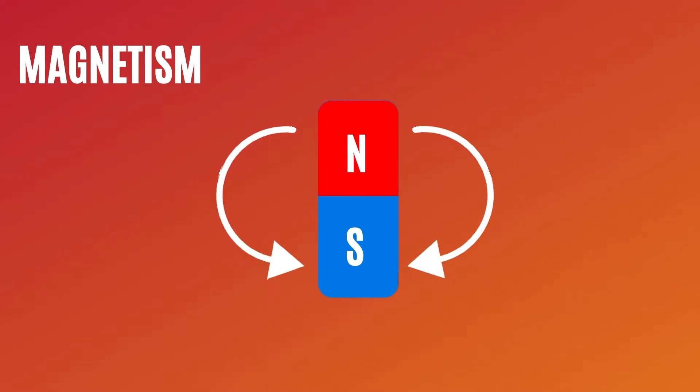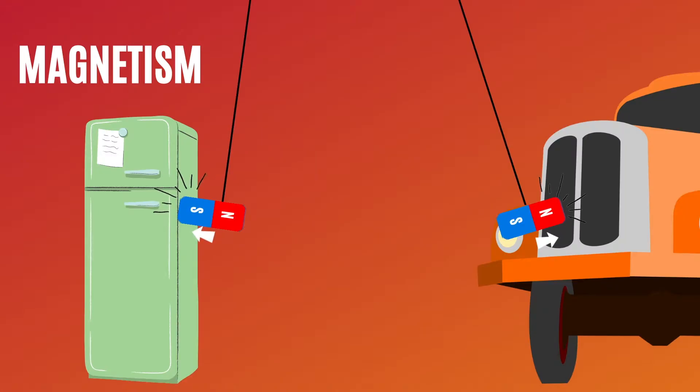Magnets have a north and south end, known as the north and south poles. Regardless of what side of the magnet you are using, they will attract and connect to metallic objects.